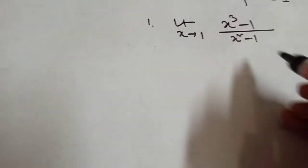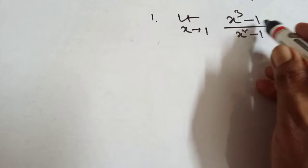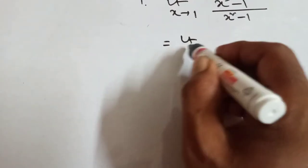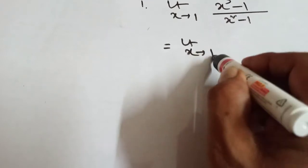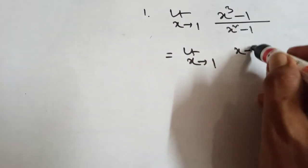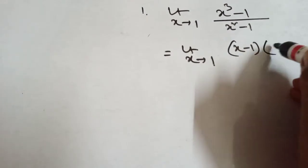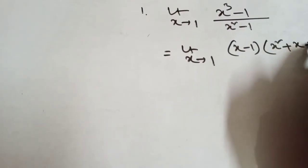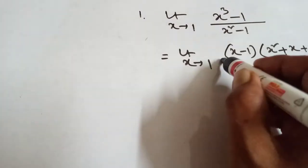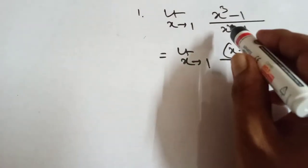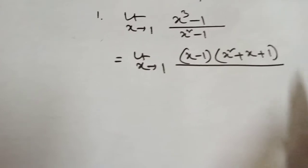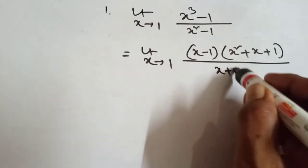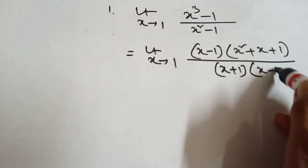First, write the formula of a cube minus b cube in factor form: a cube minus b cube equals a minus b into a square plus ab plus b square. Also write the formula of a square minus b square: a plus b into a minus b.